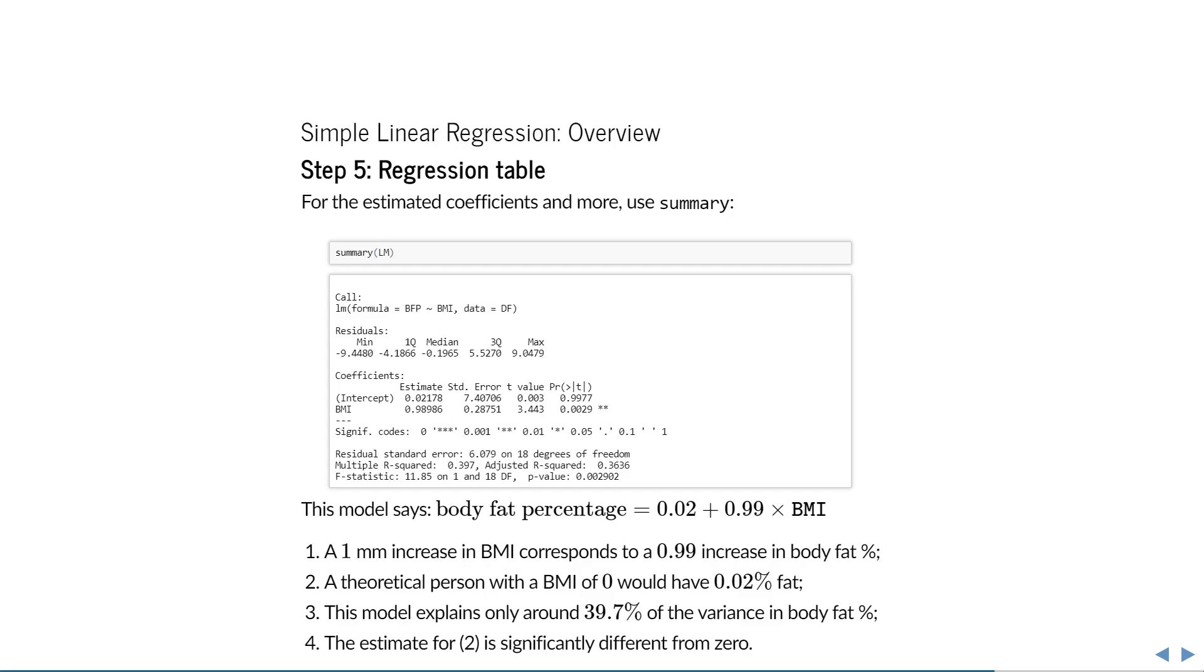In the end, then, does this model make sense? Well, of course not, because the line doesn't stop anywhere. It can still predict the body fat percentage of a man with a BMI of 100, or 1000, or minus 10, and of course those predictions aren't realistic. But purely for estimating the average change in body fat percentage with change in BMI within the range of these data, this is a useful model.